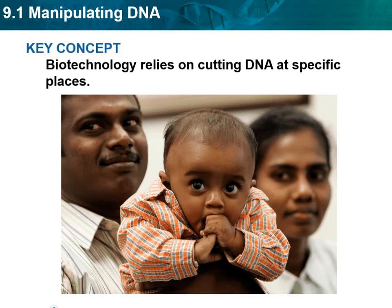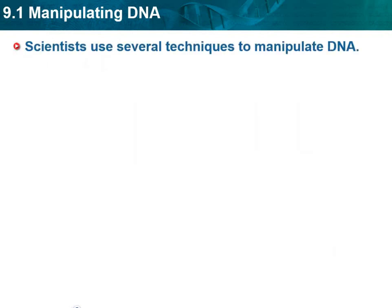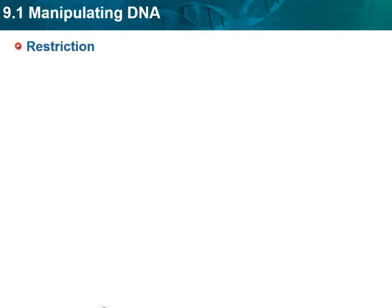That was how biotechnology was done at that point in time — we'll do an activity in class dealing with dog breeding. Now we'll move on to how we manipulate DNA nowadays. Scientists use several techniques including chemicals, computers, and bacteria, which are all used to work with DNA in genetic research and biotechnology.